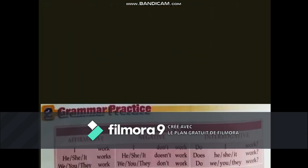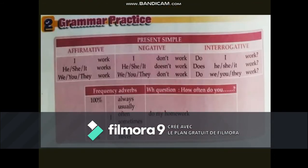Grammar practice. Simple present: affirmative, negative, and interrogative, with adverbs of frequency. Always = 100%, usually = 80%, often = 60%, sometimes = 40%, rarely = 20%, never = 0%. When you say 'I never do my homework,' it means the action never happens. Complete the conversation using the verbs in brackets in the correct form, then put the adverbs of frequency in the correct place — after the subject, before the main verb.